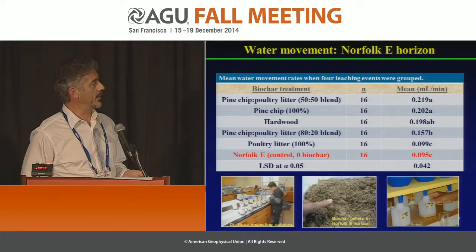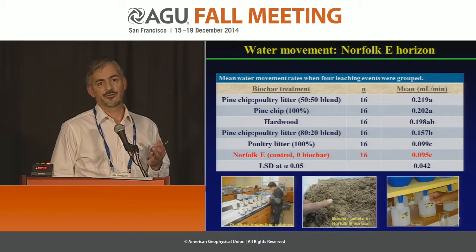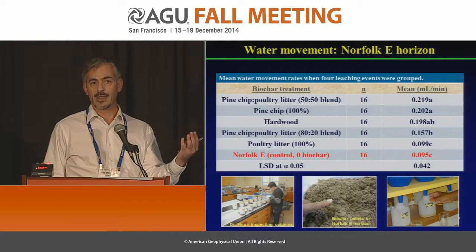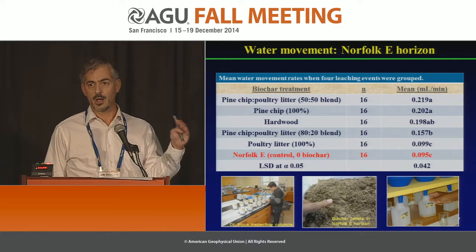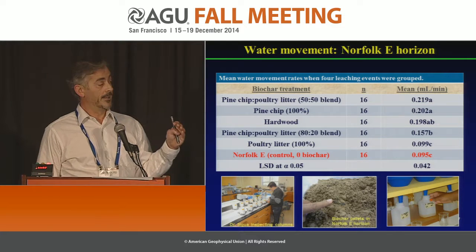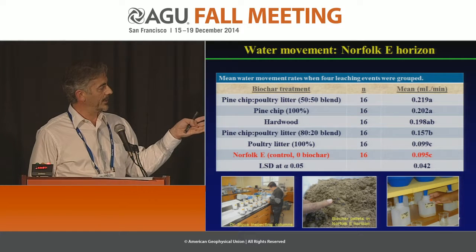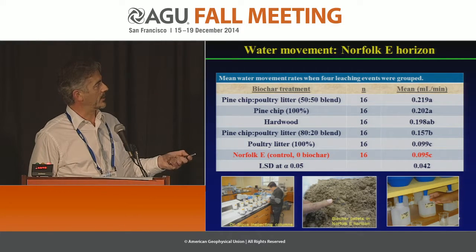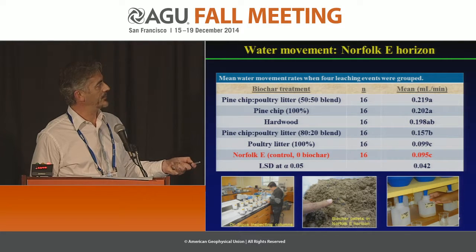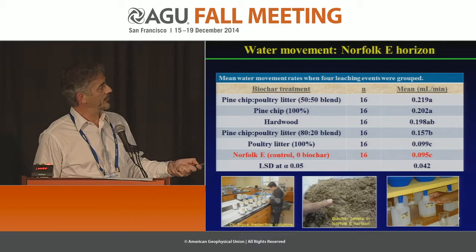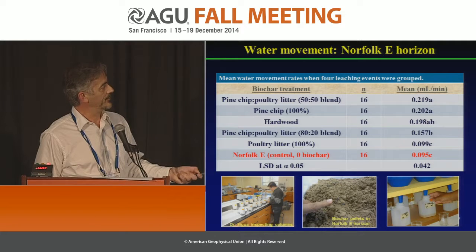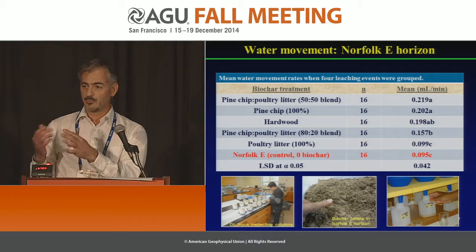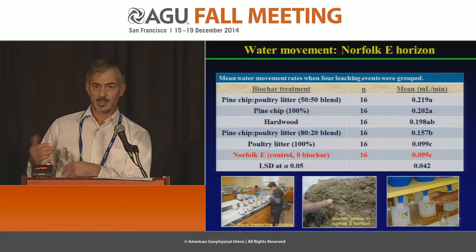This is another study from the Florence, South Carolina ARS location. They worked on the E-horizon in the Norfolk soil series — basically a hard pan. When you have irrigated agriculture or rain-fed conditions, water tends to pond on the surface of this horizon within the soil profile. The concept was to add biochar to this soil to increase infiltration. They added 1% biochar under different biochars — blended together or by themselves at different ratios. The mils per minute passing through were much greater in almost all instances compared to the control, suggesting deep chisel plowing to mix biochar into that E-horizon could improve water relations.